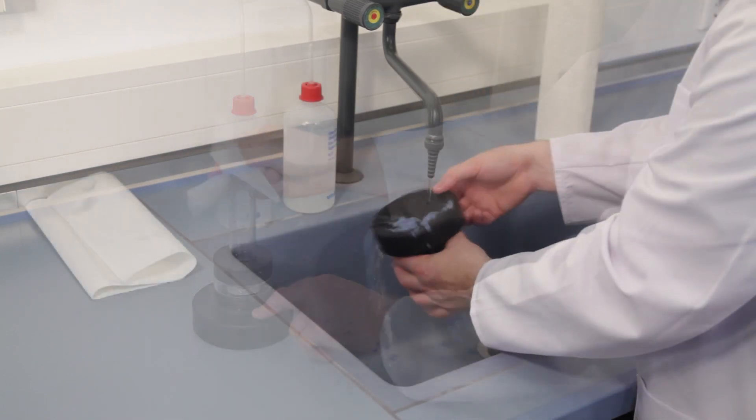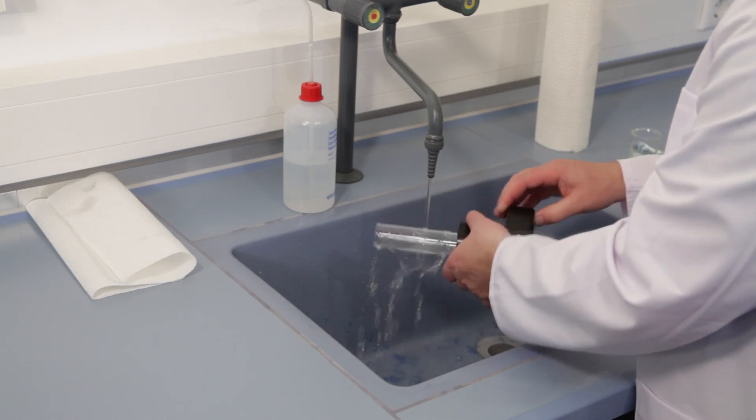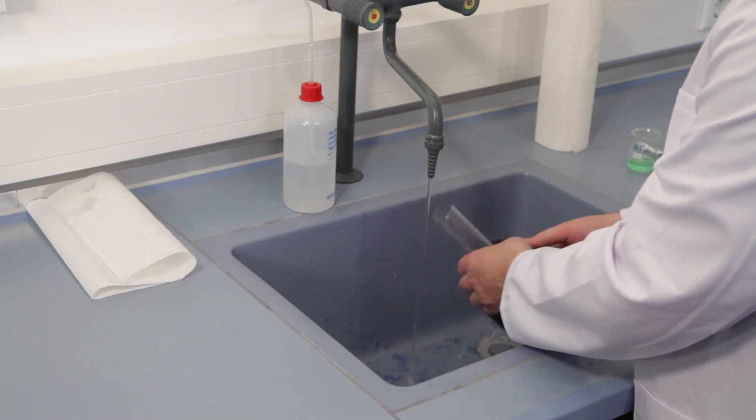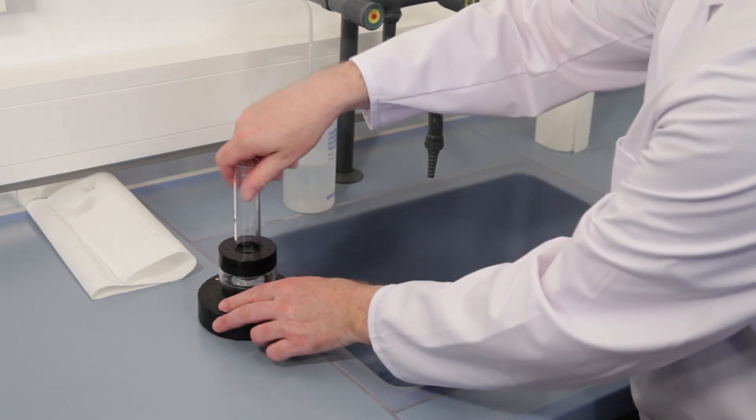In case of heavy contamination or after the end of a trial series, a thorough cleaning of the measuring cell is recommended. Rinse the measuring cell under tap water and disassemble it.